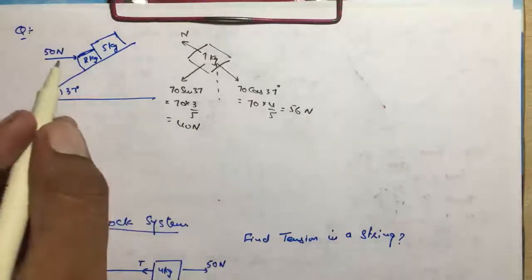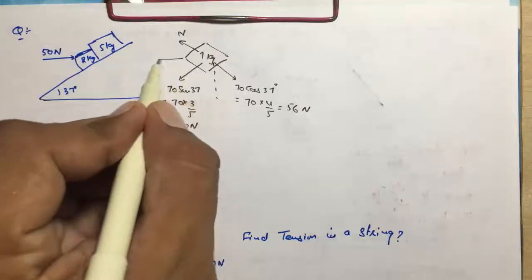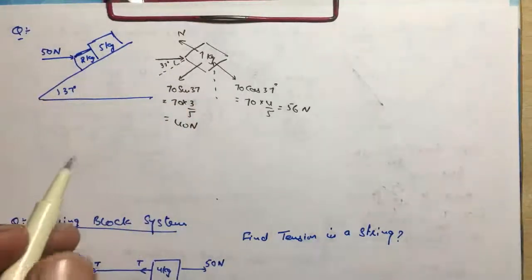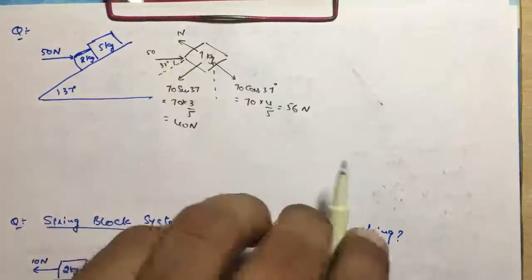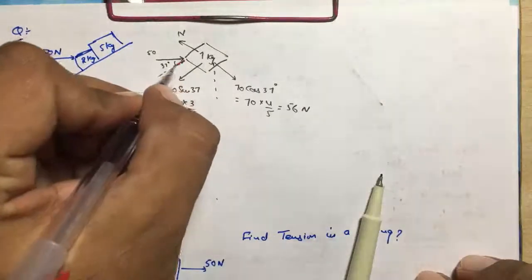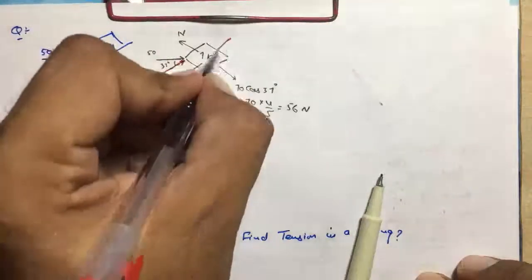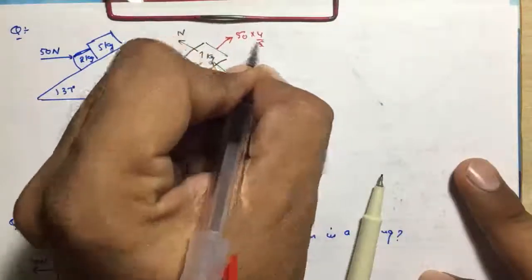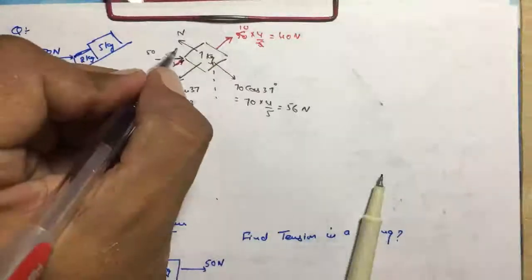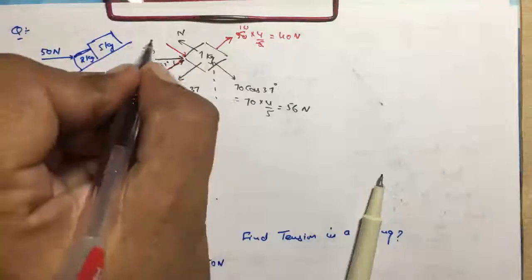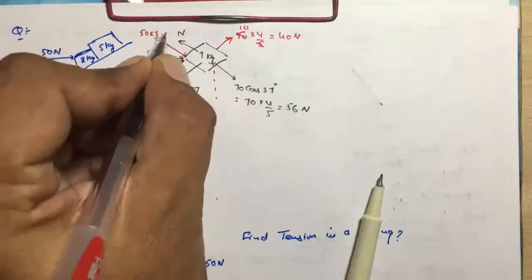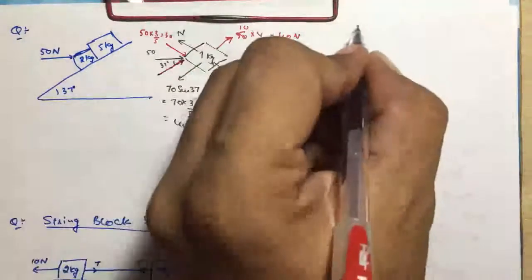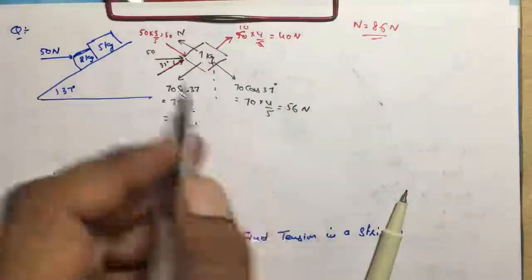तो इतनी force लग रही है इसके उपर। इसके इलावा यह जो 50 newton force लग रही है, that is also acting in this direction such that this angle is 37 degree. तो इस 50 का एक component इस direction में लेना है। I'll draw it in red color — that will be 50 cos 37, cos 37 होता है 4 by 5, तो यह होगा 40 newton force ऊपर की तरफ। और इसका एक component नीचे की तरफ act कर रहा है।